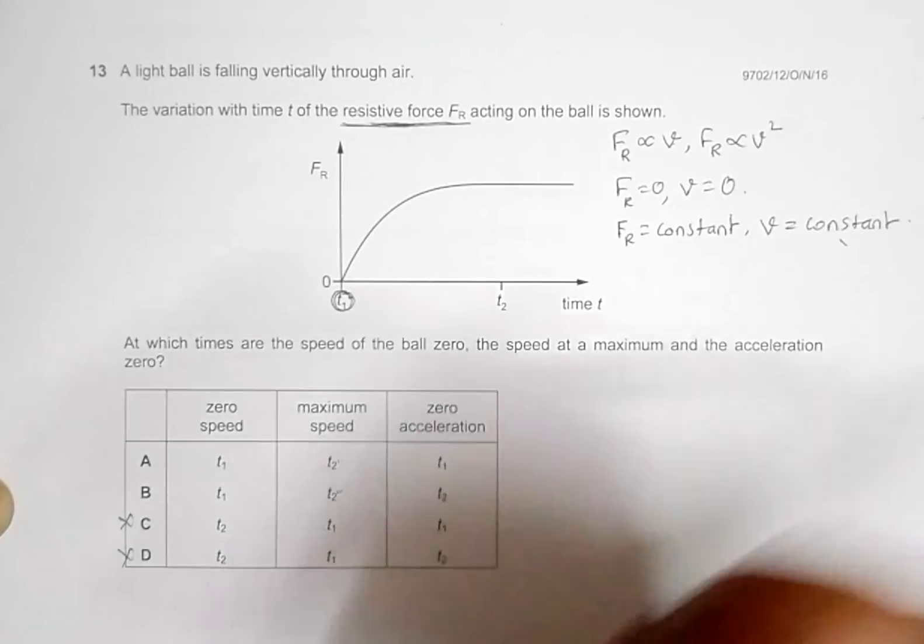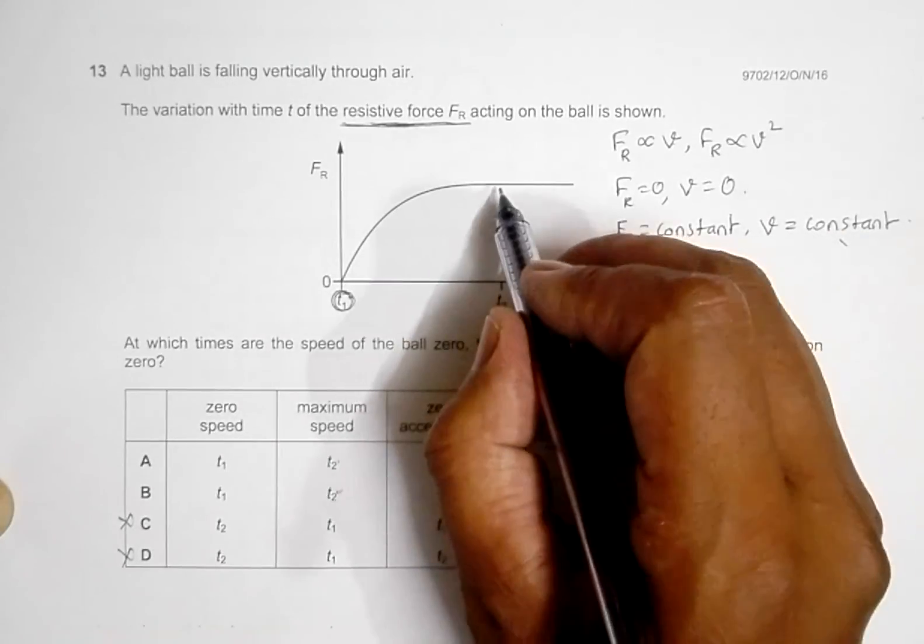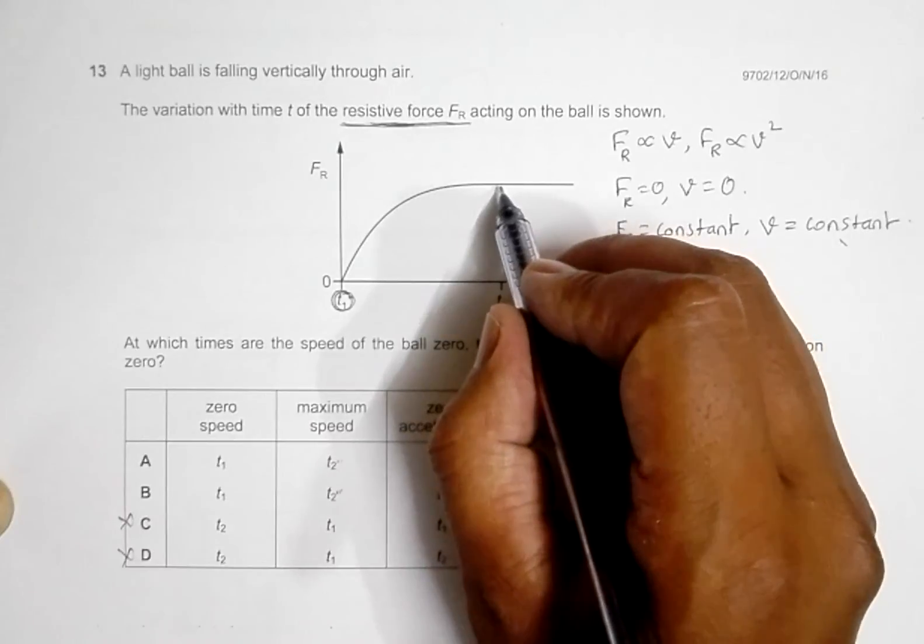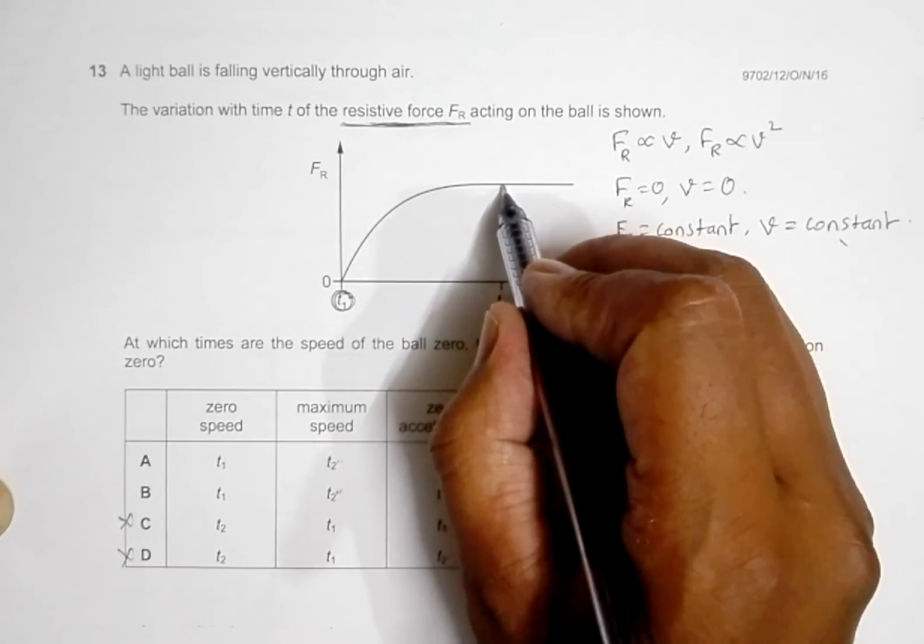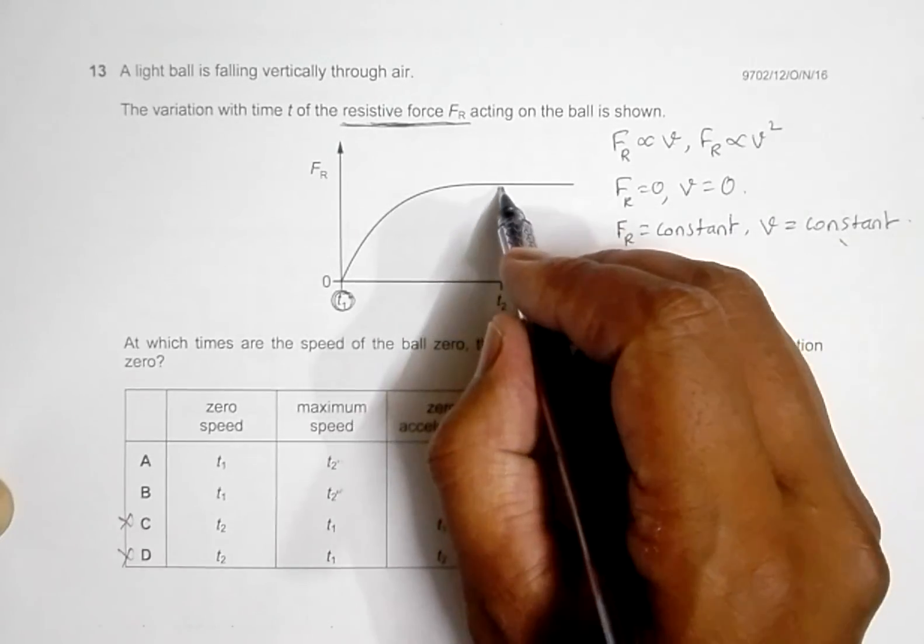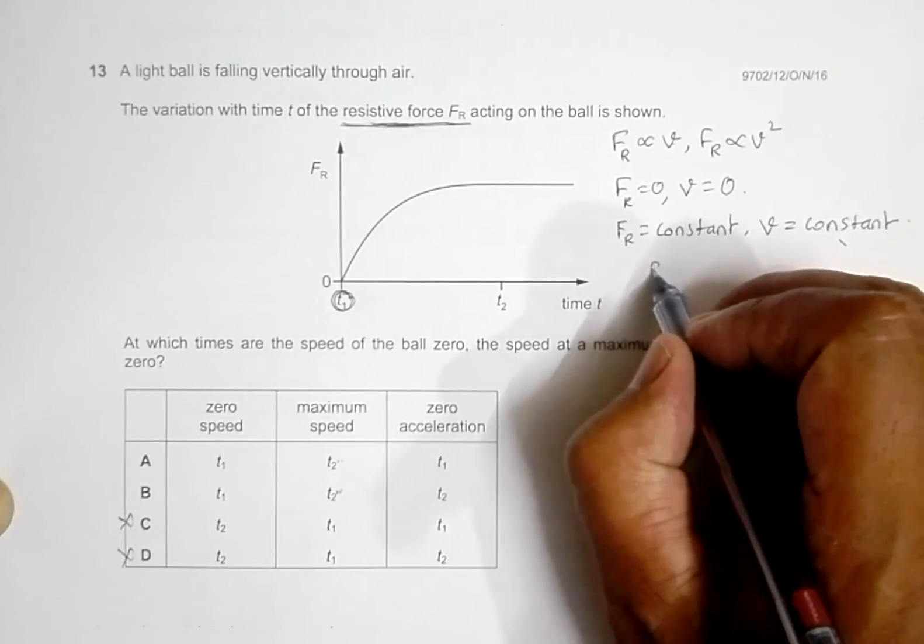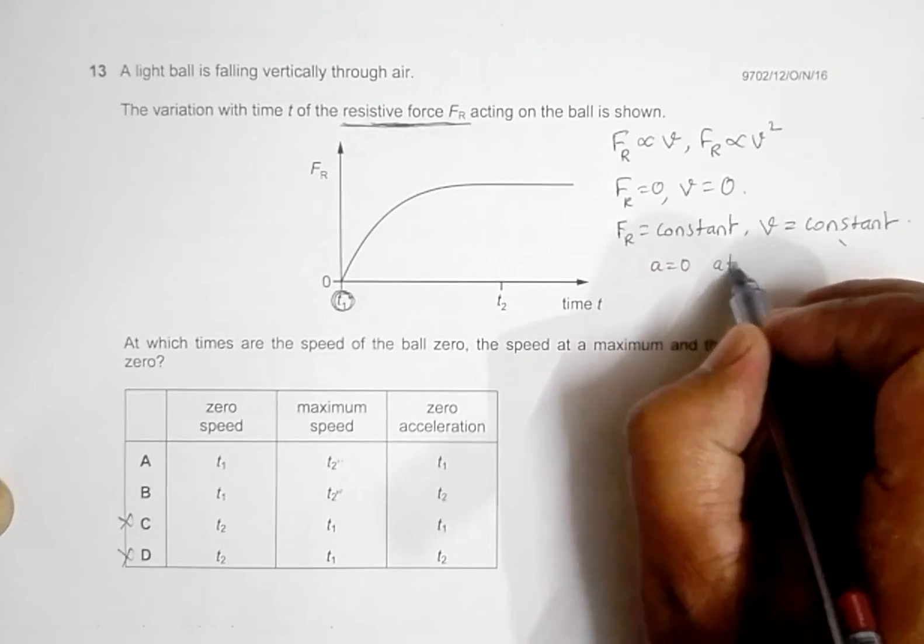And then, since the velocity is constant here, the acceleration is zero. So at t2, we have got a equals zero at t2.